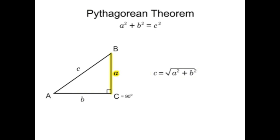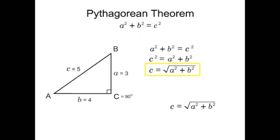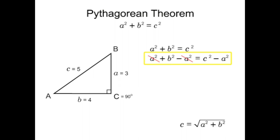If side A equals 3 and side B equals 4, then C will equal 5. The equation can also be rearranged to find either of the other two sides.